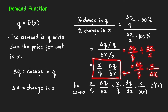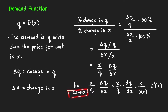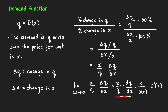Since we are only considering a small change in price, we can take the limit of this expression as delta x goes to zero. As delta x goes to zero, the limit of this quotient is just the derivative of the demand function q with respect to the unit price x. This product can then be written as x over d of x — because q equals d of x — times d prime of x.